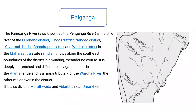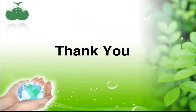We have covered all three West Flowing Rivers of Maharashtra: First, Narmada River; Second, Tapi River; and Third, Pai Ganga River. Thank you.